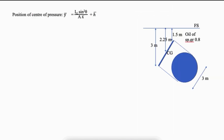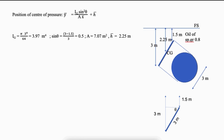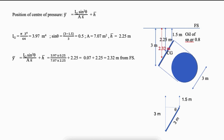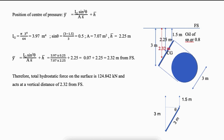Position of center of pressure Y-bar equals IG sin²theta by (A H-bar) plus H-bar. IG equals pi d⁴ by 64, which is 3.97 m⁴. Sin theta equals 0.5. Substituting these values, Y-bar comes to 2.32 meters from the free surface. Therefore the total hydrostatic force of 124.842 kN acts at a vertical distance of 2.32 meters from the free surface.